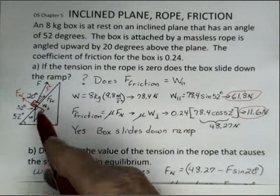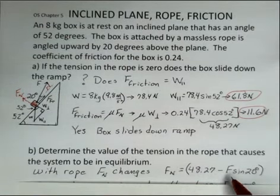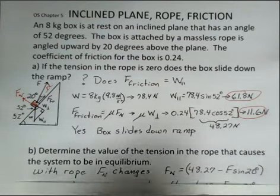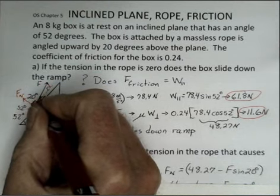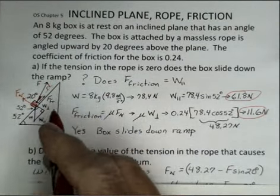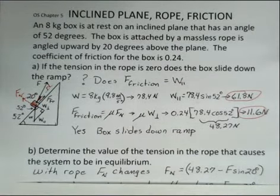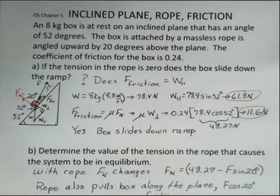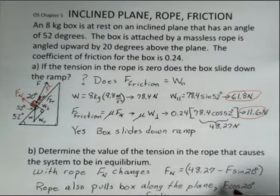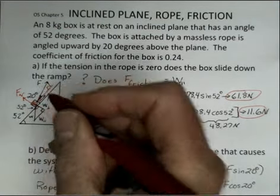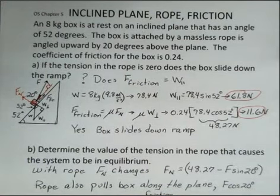And our normal force is no longer going to be what we calculated before, the perpendicular component of the weight. It's not going to be 48.27. The rope is pulling out from the ramp a little bit. So that's going to be our unknown force of the rope, tension in the rope, multiplied by the sine of 20 degrees. 20 degrees is our angle that our rope is above the plane. And we need the opposite side to the 20 degree angle. So we'll use the sine function to calculate that. And that's just one piece of information we're going to use. So the rope also has a component along the plane. And that's found by F times the cosine of 20 degrees, this adjacent side to the 20 degree angle. So let's go ahead and write down our equilibrium condition.